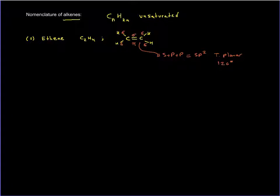The second member is propene. Prop stands for three carbons, so C3H6. The double bond is between the first two carbons. The last carbon has three hydrogens, the middle carbon has one hydrogen, and the first carbon has two hydrogens.